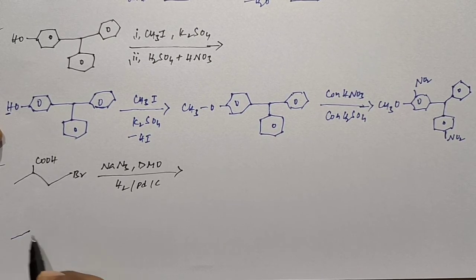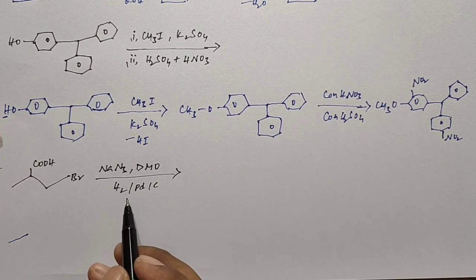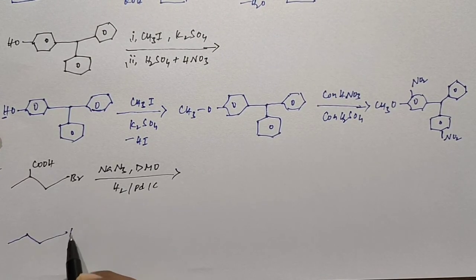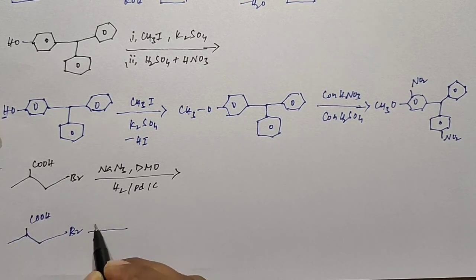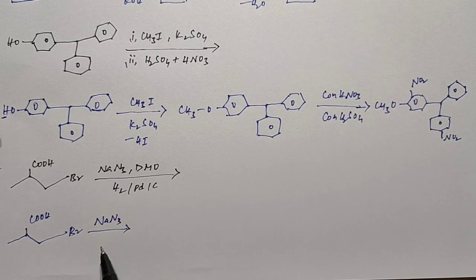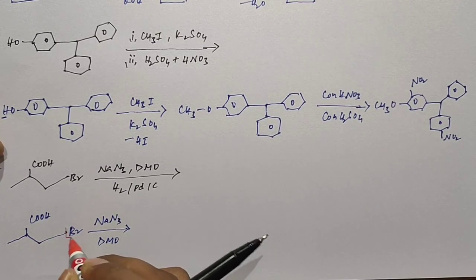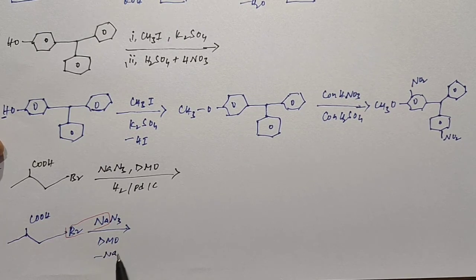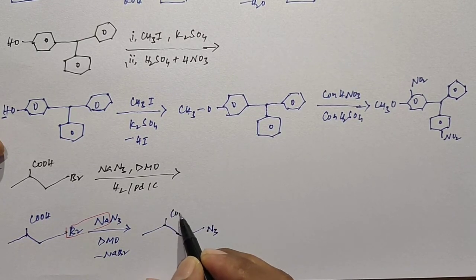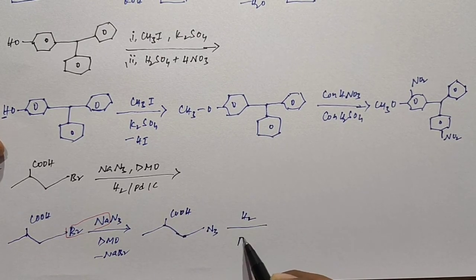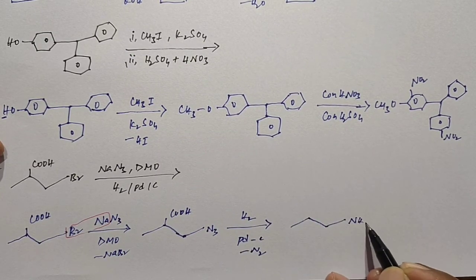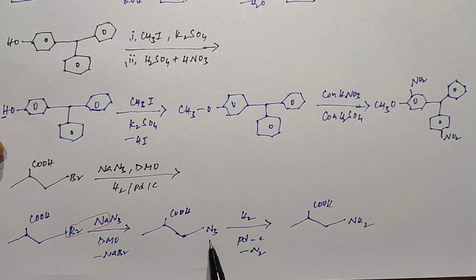The next incomplete reaction: the compound reacts with sodium azide (NaN₃) in DMF, then undergoes reduction. In the first step, sodium and bromine leave as sodium bromide, and the azide group (N₃) is introduced. In the second step, reduction in the presence of palladium on carbon cleaves two nitrogen atoms from the N₃ group, replacing them with two hydrogen atoms. This gives the final amine product.